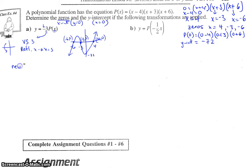So the new zeros are actually the same as the old zeros, which would be 4, -3, and -6. Or we could write those as coordinates: (4, 0), (-3, 0), (-6, 0).